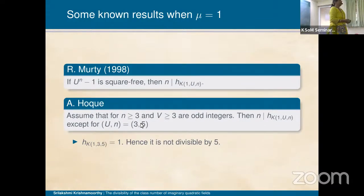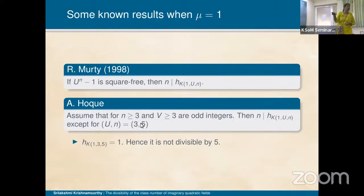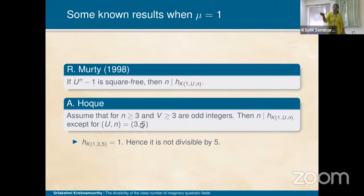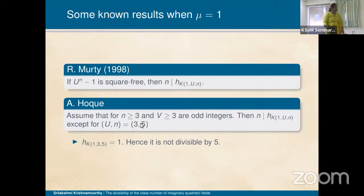Ramurthi studied this in 1998. If u^n − 1 is square-free, then considering the collection K(1, u, n), n divides the class number of that particular family of quadratic fields. Azizul Haq considered (u, n) ≠ (3, 5), where n ≥ 3 and v ≥ 3, and except that case, we have n divides h of K(1, u, n), with no assumption on u^n − 1 being square-free.